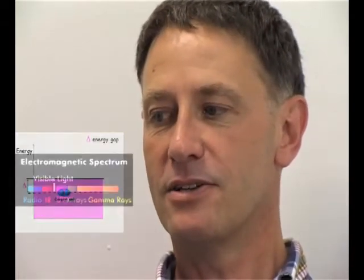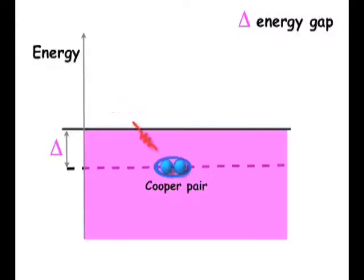So why is it that superconductors are so special at this frequency range? And it's simply that the energy gap, in other words the amount of energy that you have to supply in order to break superconducting pairs, lies precisely in the terahertz frequency range.